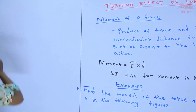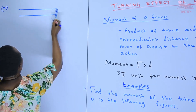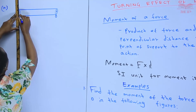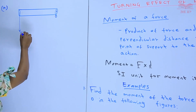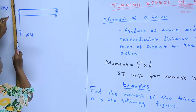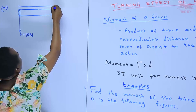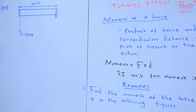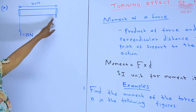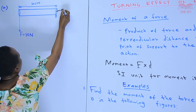In figure A, we have point O as the pivot. A force of 10 Newtons is applied, and we have been given a distance of 10 centimeters. We want to find the moment of the force about point O.